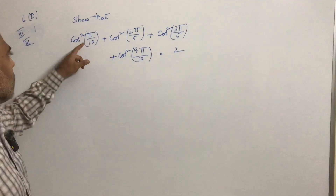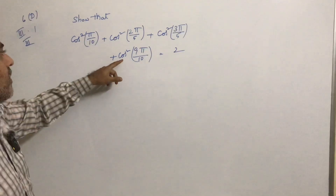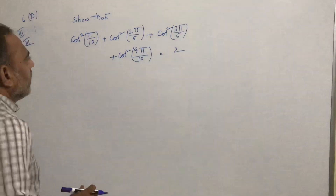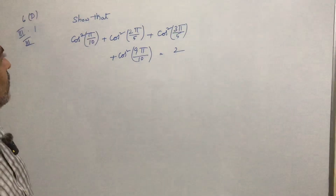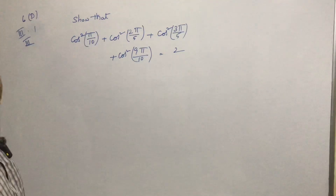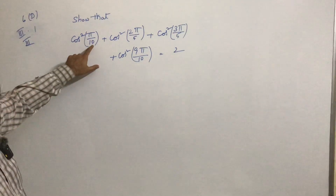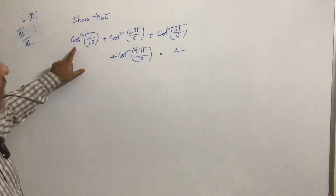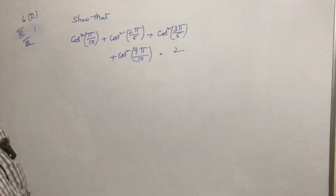The next problem is to show that cos²(π/10) + cos²(2π/5) + cos²(3π/5) + cos²(9π/10) = 2. The given terms are in the form of cos²θ. If a term is in the form cos²θ, we need to convert it into (1 + cos2θ)/2 and simplify. That is the procedure.